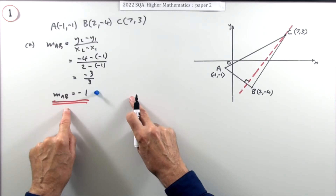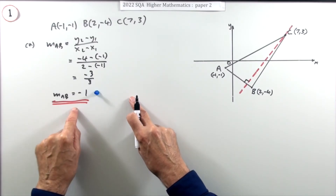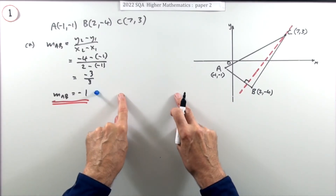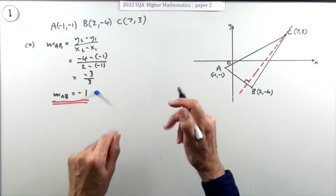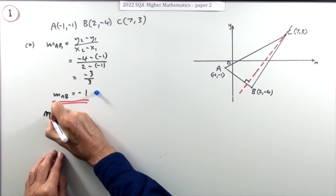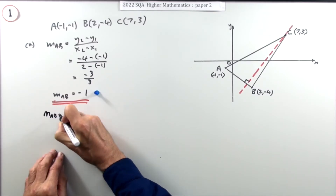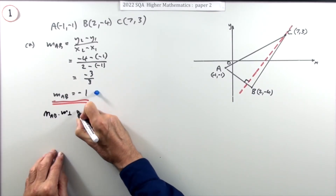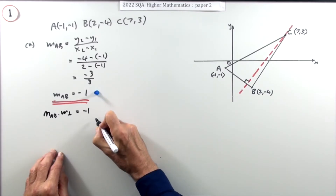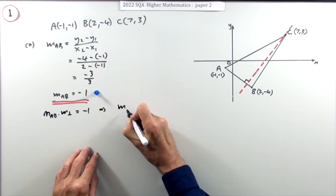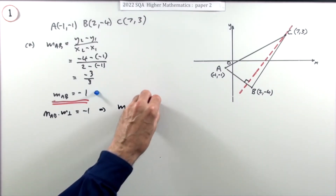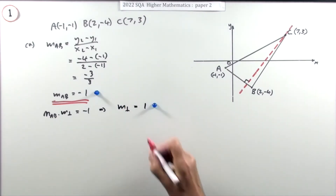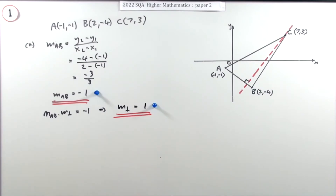The perpendicular gradient is the negative of the reciprocal. You can state that the gradient of AB times its perpendicular gradient equals −1, which means the perpendicular gradient will be positive 1. That gets a mark.